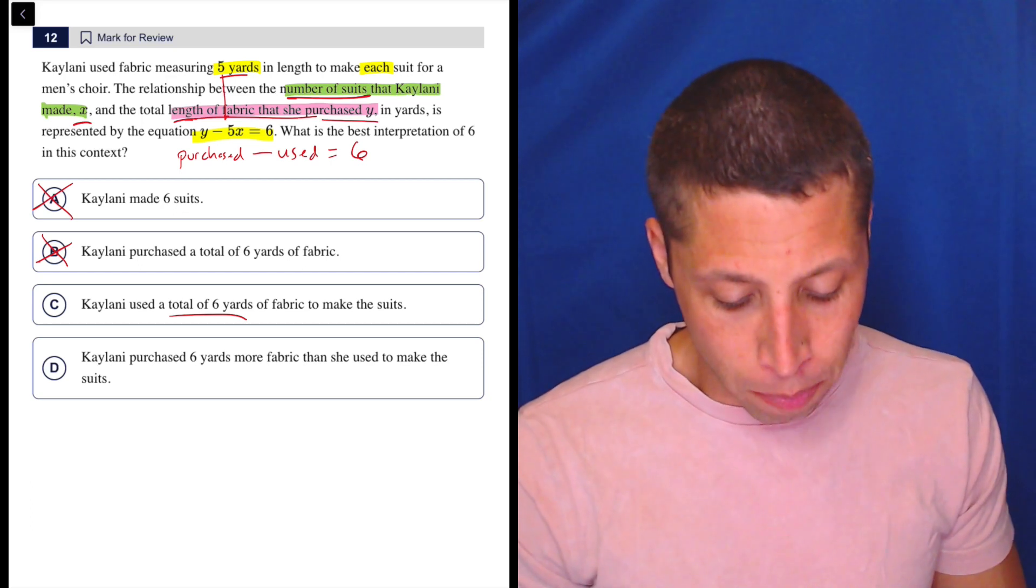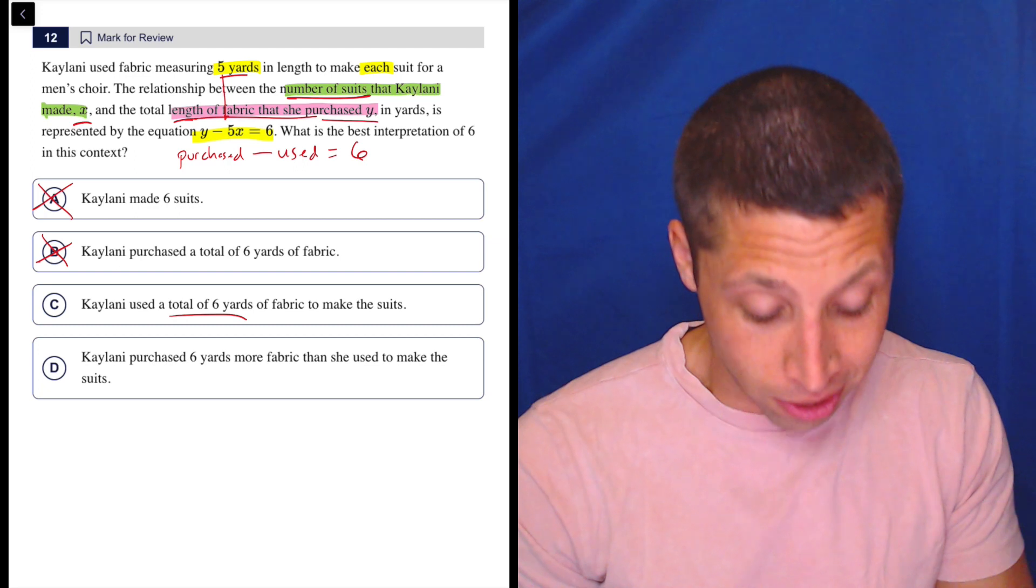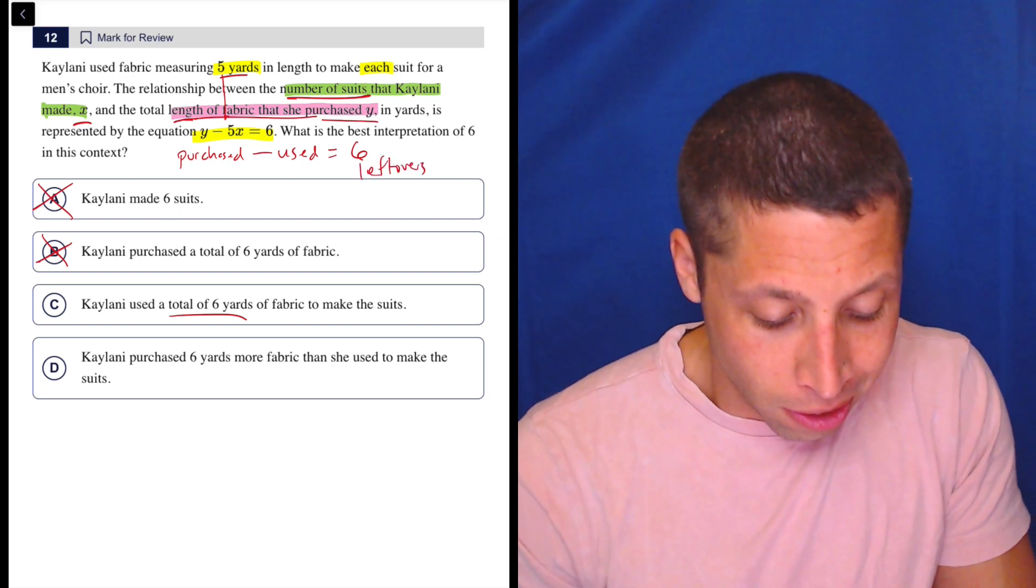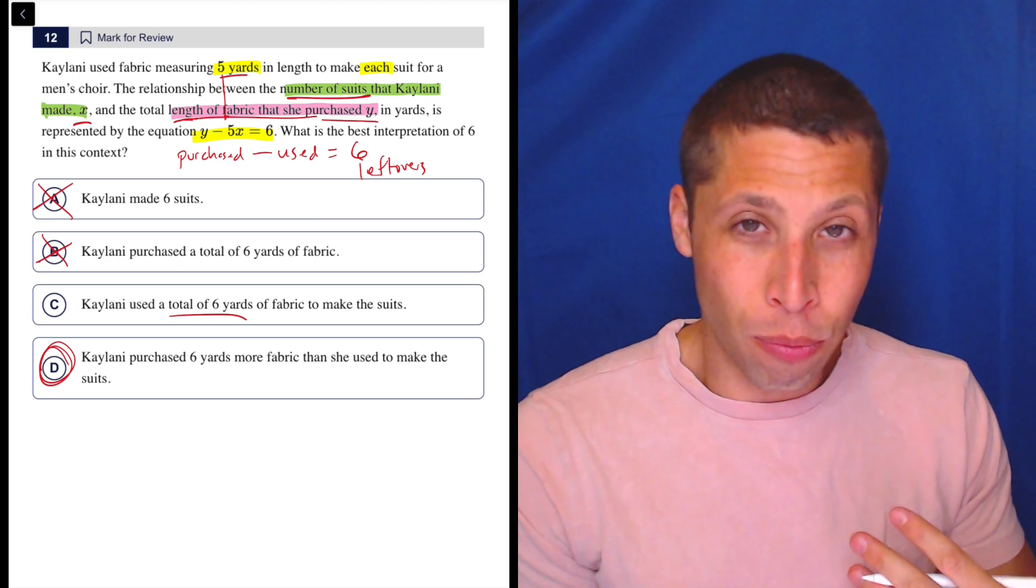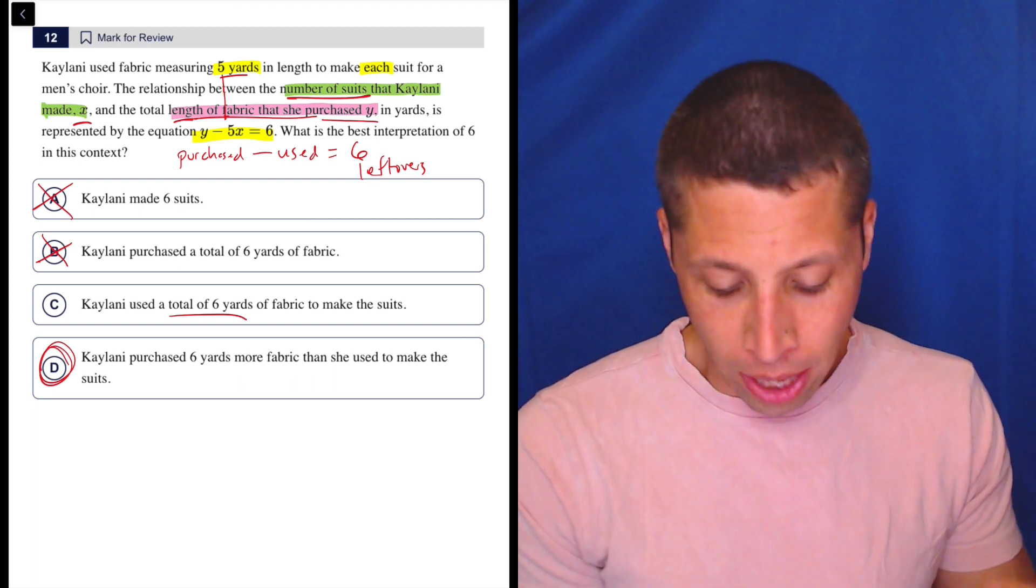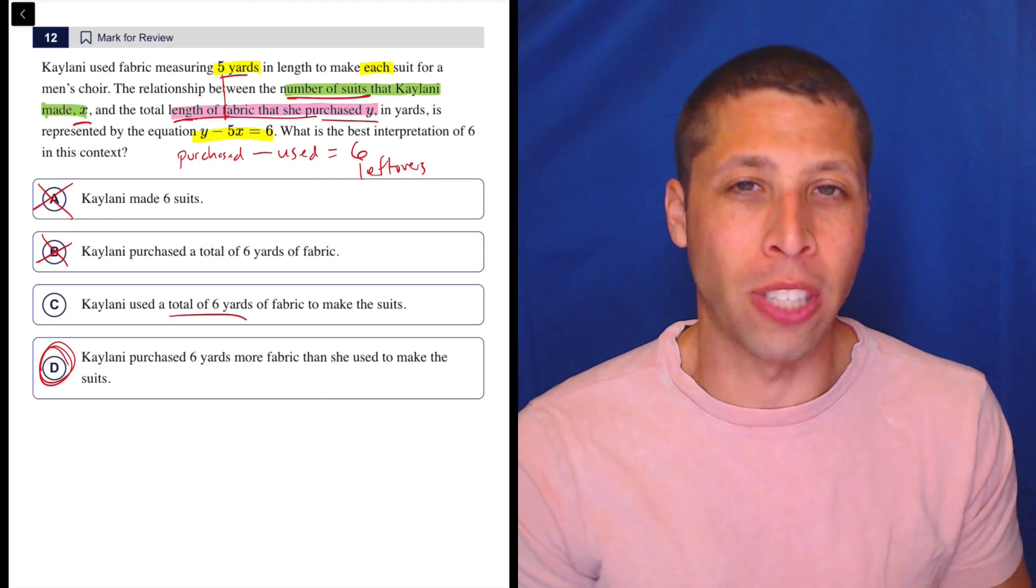That now seems to make a lot more sense with choice D. She purchased six additional yards, this is kind of like the leftovers. It's not so much that I'm proving C wrong, it's more just that D fits better with my understanding of the story.